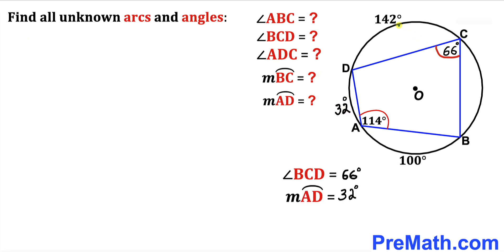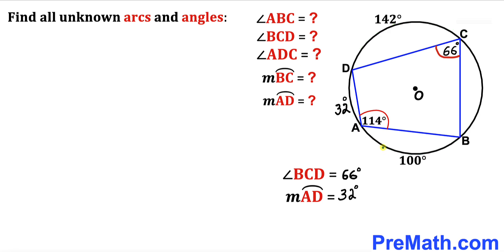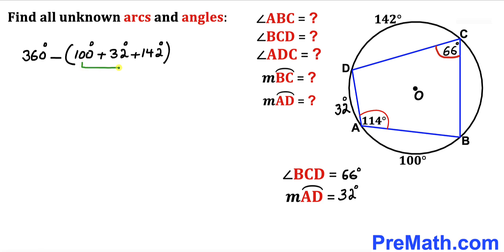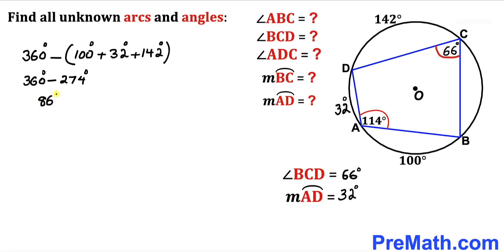We know the full arc around the circle is 360 degrees. Arc AB is 100 degrees, arc CD is 142 degrees, and arc AD is 32 degrees. We can find arc BC by adding those individual arcs and subtracting from 360 degrees: 360 minus 274 gives us 86 degrees. So the measurement of arc BC turns out to be 86 degrees.